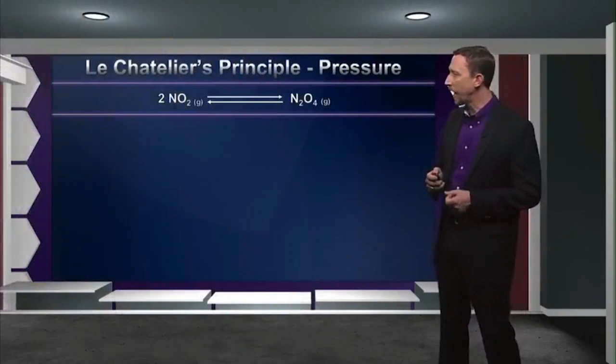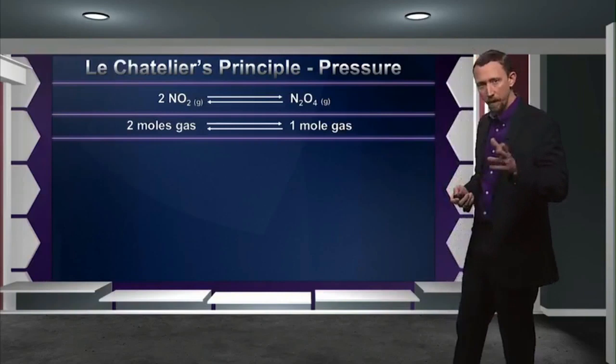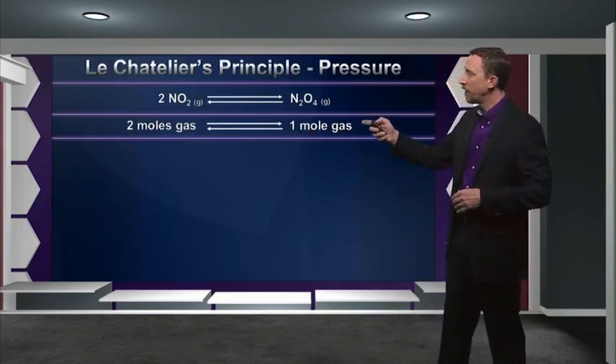More frequent collisions means more pressure. So, if I increase the pressure on a system of gases like NO2 and N2O4, and Le Chatelier's principle applies, how might this system shift in order to undo my pressure change? Here's our reaction: NO2 in equilibrium with N2O4. Pressure is related to several things, not the least of which is the number of moles of gas present — remember the ideal gas law. In this case, I have a reaction in which I have two moles of gas as starting material in equilibrium with one mole of gas as my product, so this system can change the number of moles of gas present by shifting.